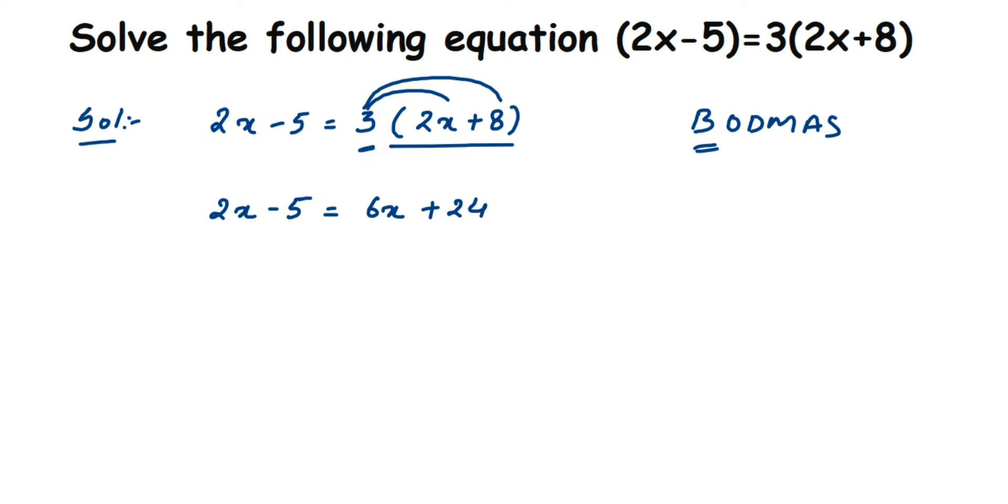Now once we have done this, we have to bring all the constants to one side of the equation and the variables to one side. So here I'm going to transpose this 24 to the other side and transpose 2x to the other side. This is one way, or you can transpose minus 5 to this side and 6x to the other side—it's completely up to you. You will get the same answer at the end.